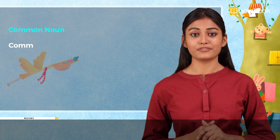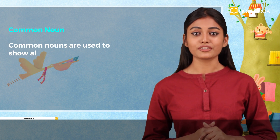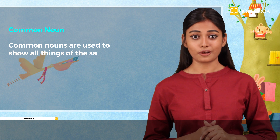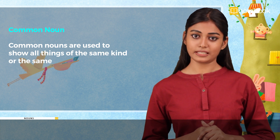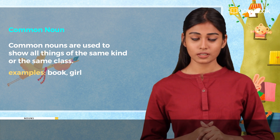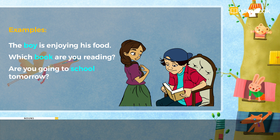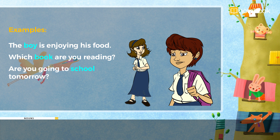Next, we have the common noun. Common nouns are used to show all things of the same kind or the same class. Examples: book, girl. Some sentences with common nouns: The boy is enjoying his food. Which book are you reading? Are you going to school tomorrow?